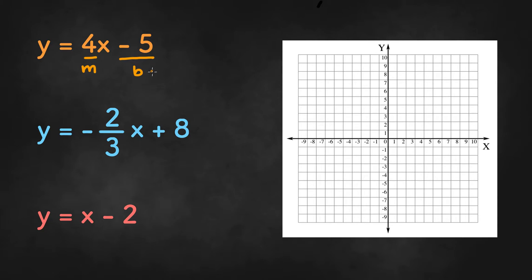So when we graph this we're going to start off with plotting the negative 5 on the y-axis for the y-intercept. So we're going to start off with this point right over here and then we're going to move on to the slope.